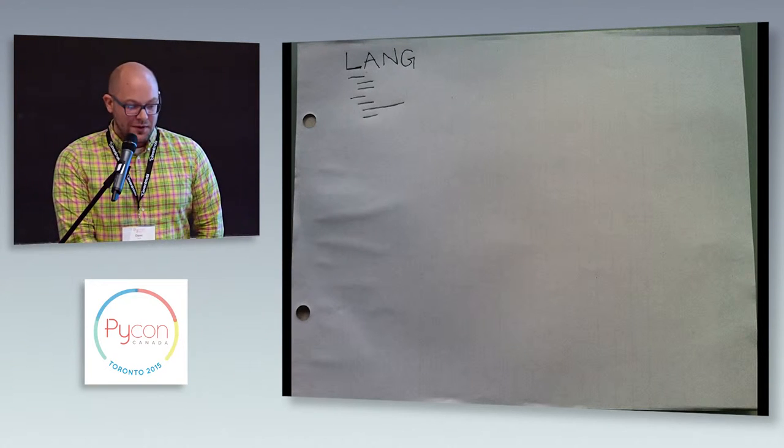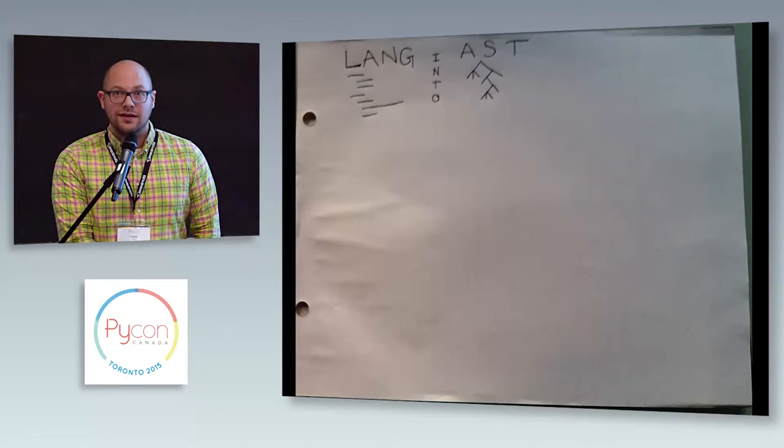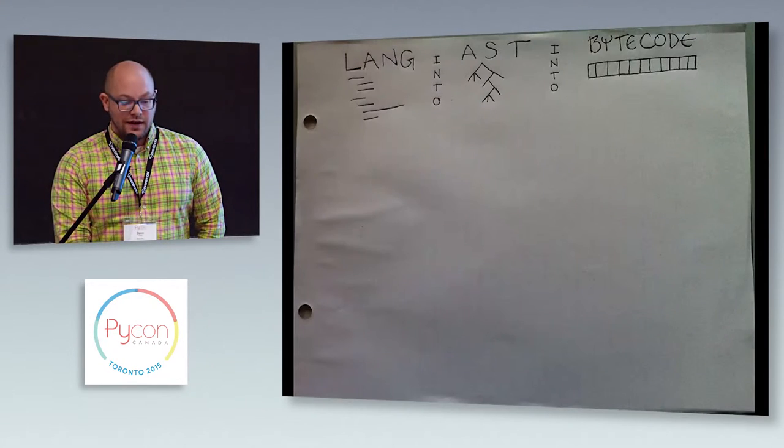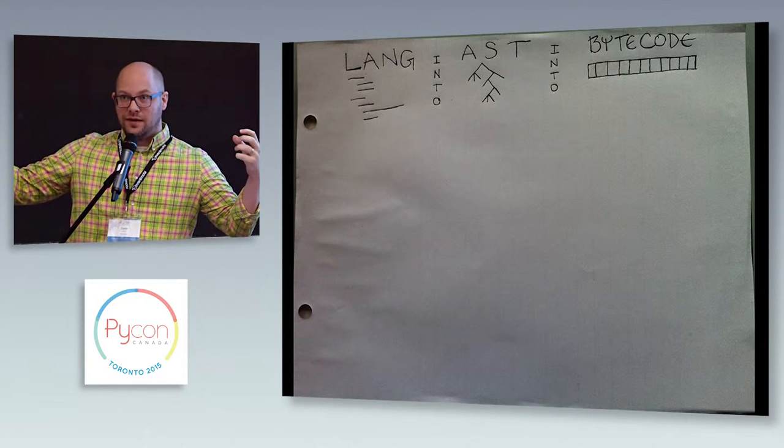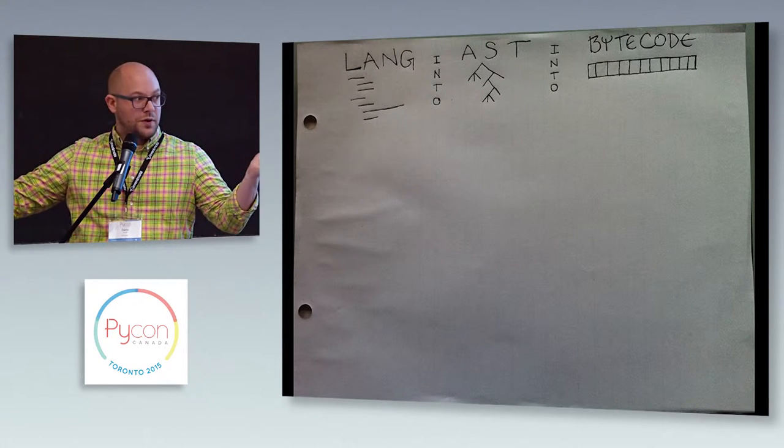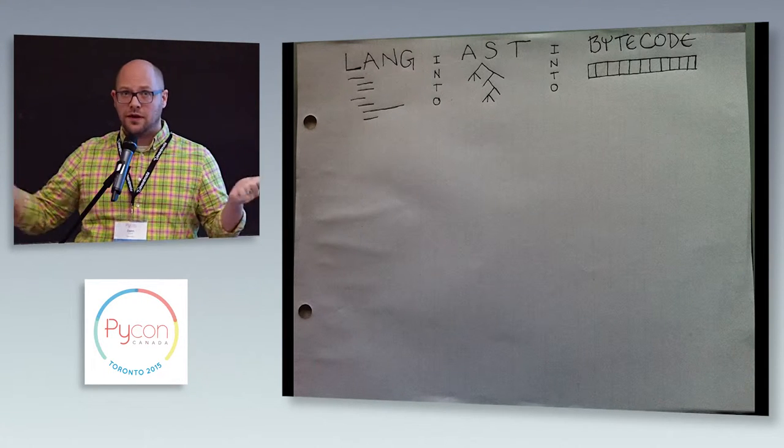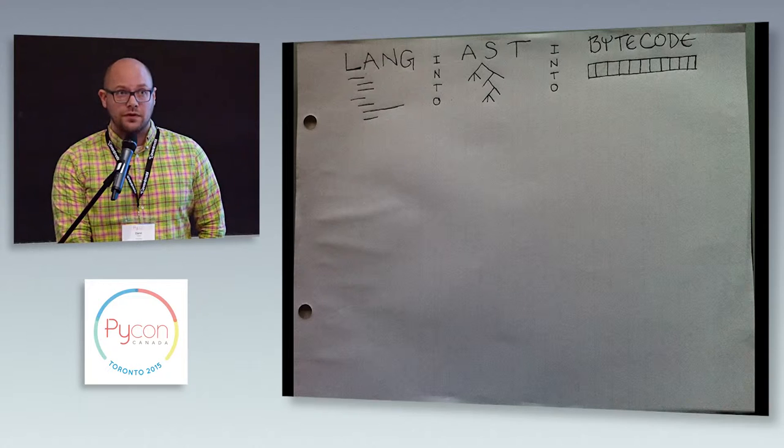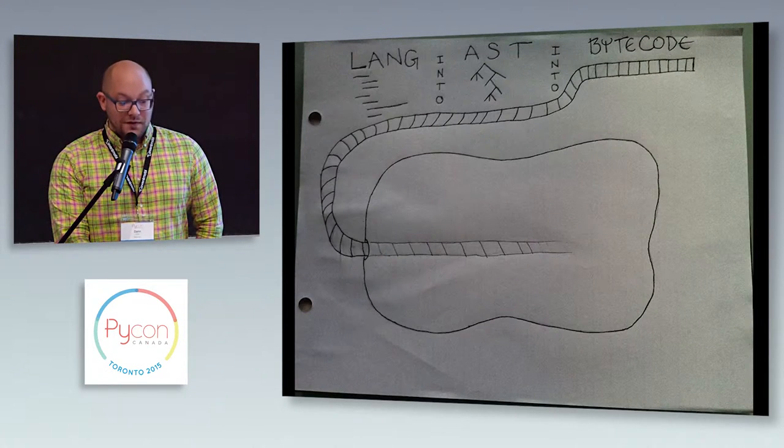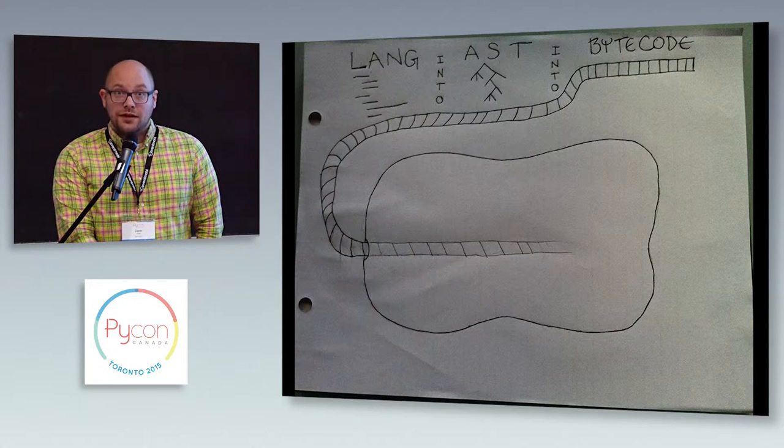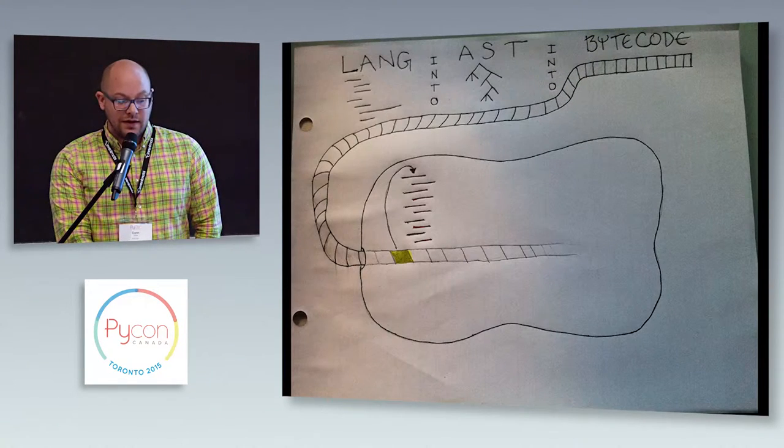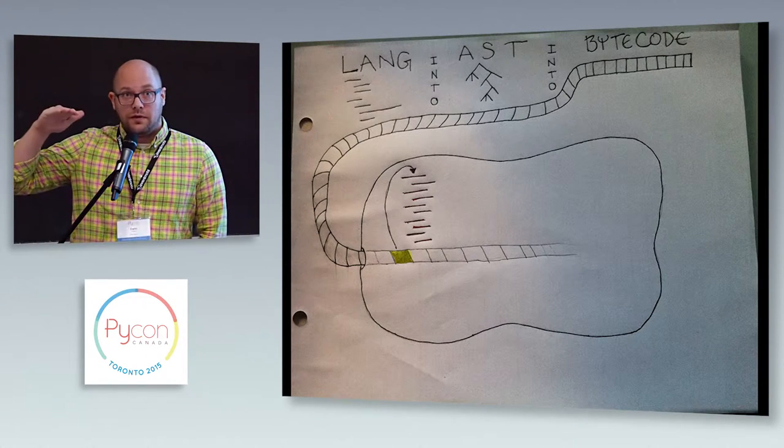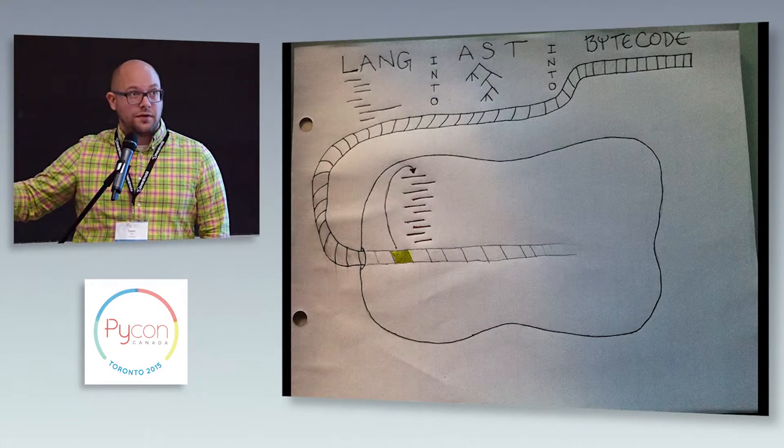So here's our language. We have some code in the language and then we're going to translate that into an AST, which is like a tree shape that represents the tree structure of our language. And then we're going to translate that into bytecode, which is just a long serialized list of operations that we want to perform. And with certain languages, like brain fudge, we can skip the AST part and just go straight from the language to the bytecode with a really trivial parser.